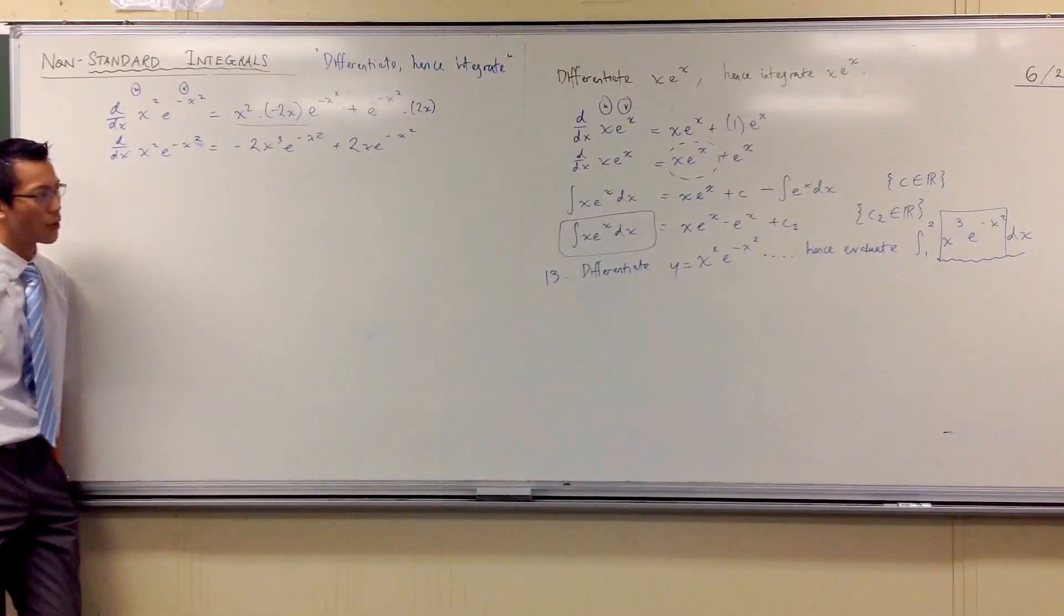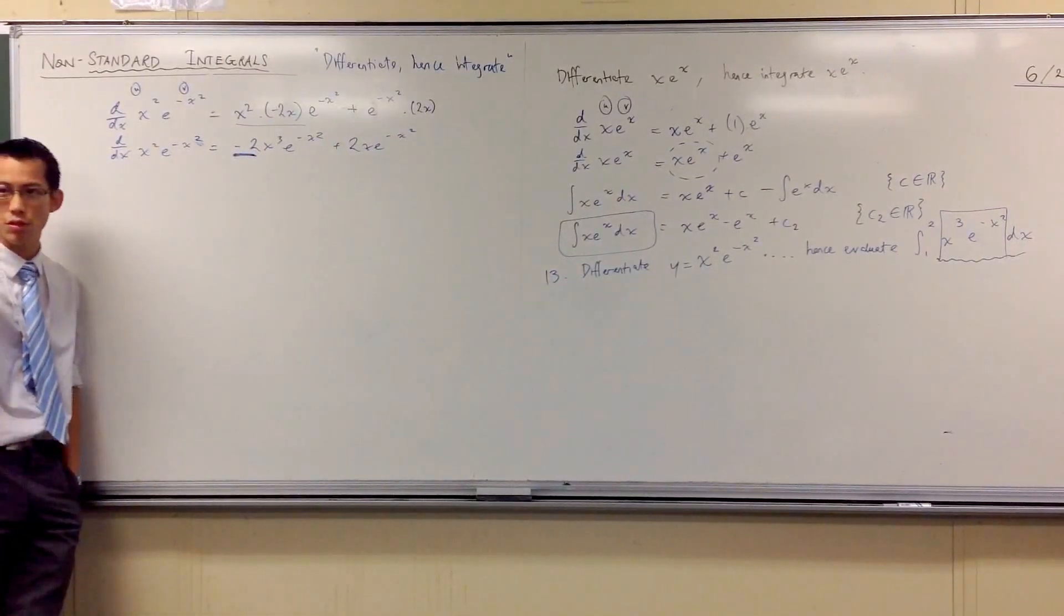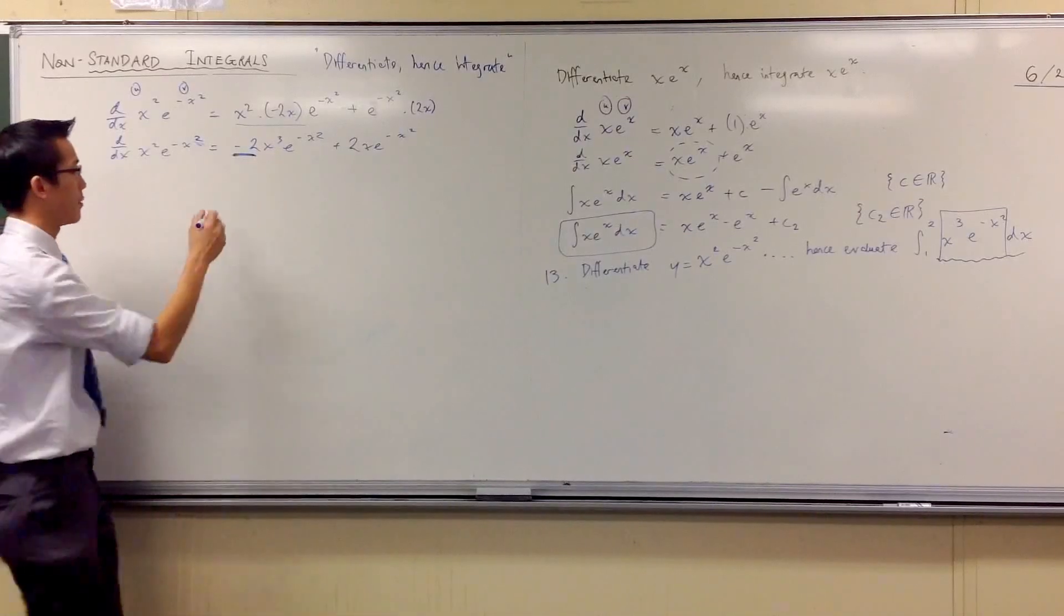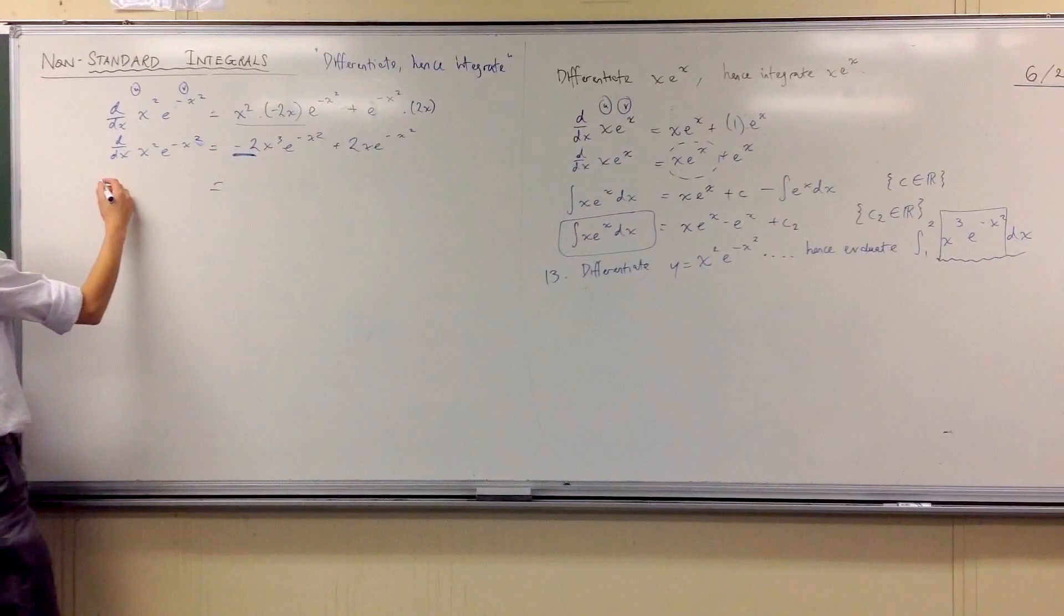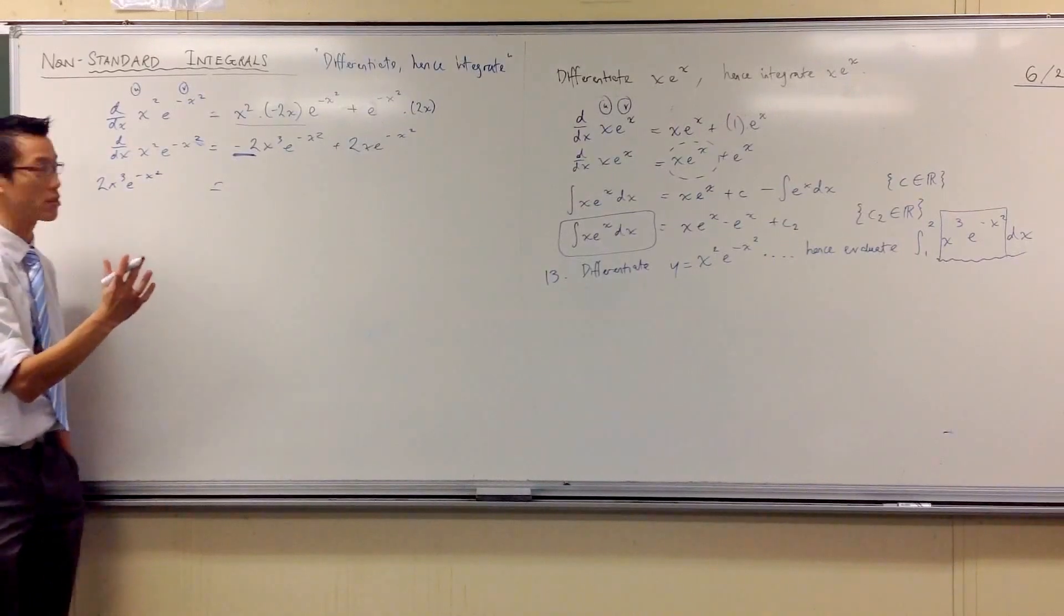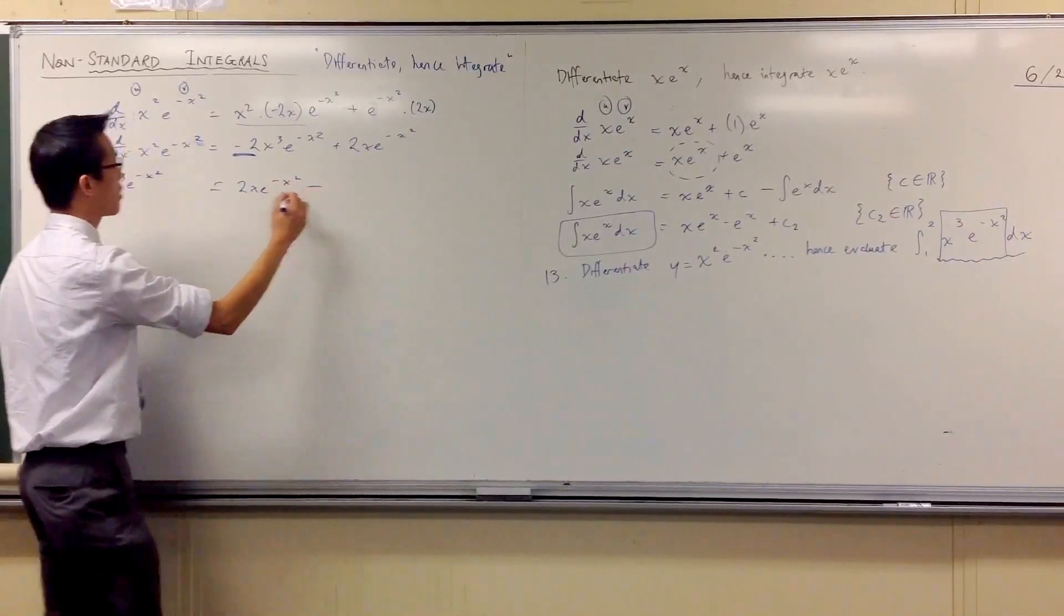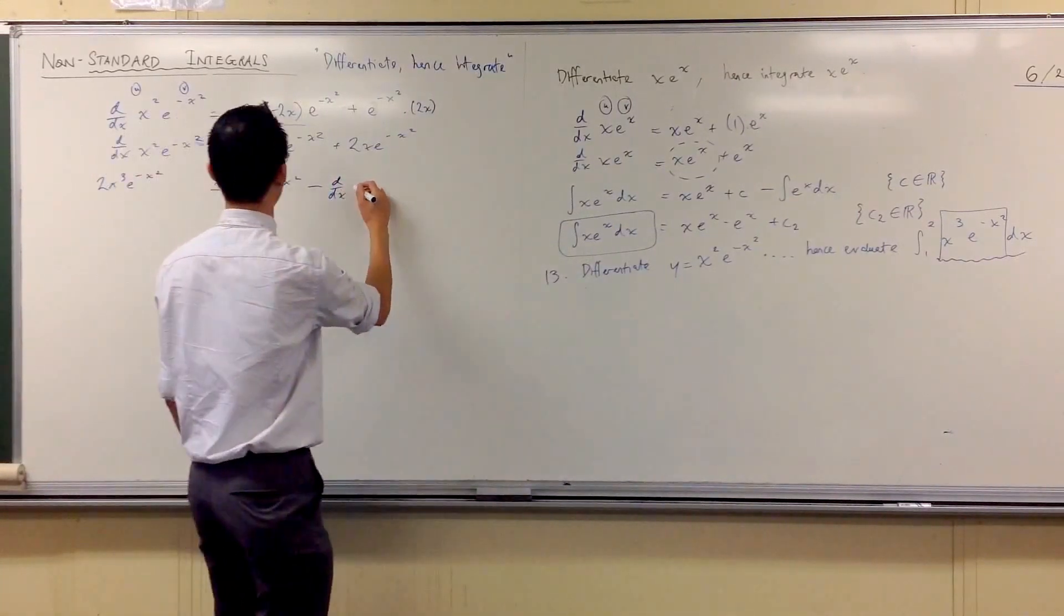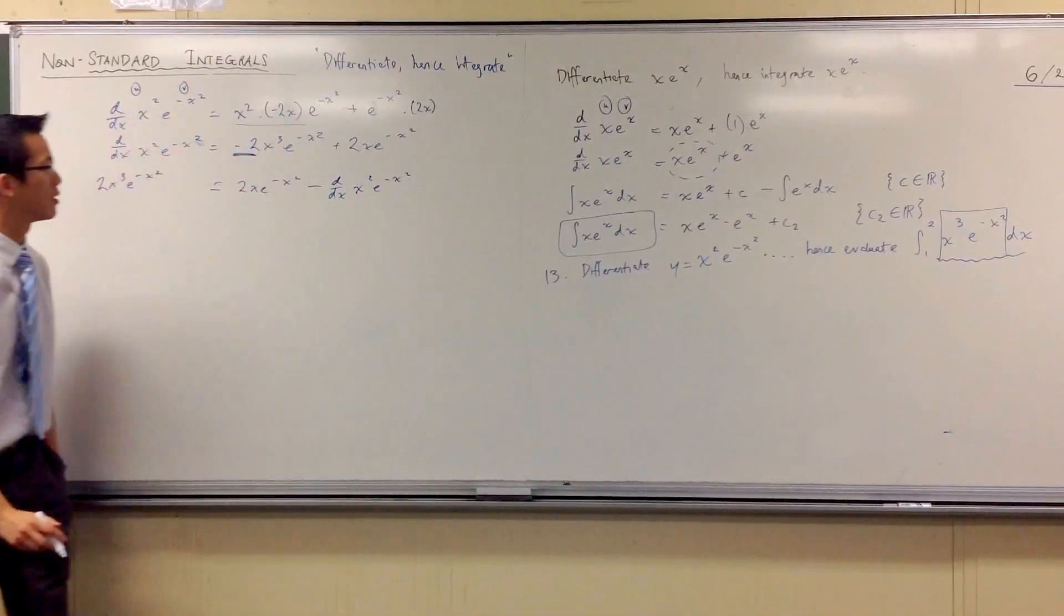So being that what we've got doesn't have this minus 2 hanging out the front, I think we want to do two things. We want to make it the subject, and then we want to get rid of that minus 2. So let's do that. Let's move him over to the left-hand side. So I'm going to get 2x cubed e to the minus x squared. Just add it to both sides. Over here, I've got this guy's positive, and I'm subtracting this derivative. Swapping places, really.